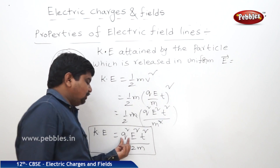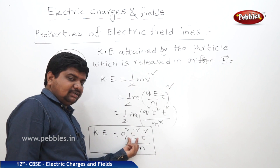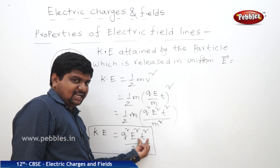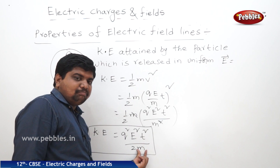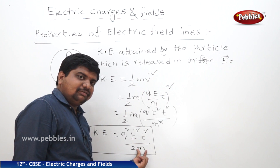Where Q is charge, E is electric field intensity, T is time taken, and M is mass of the particle released in the electric field.